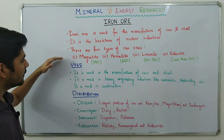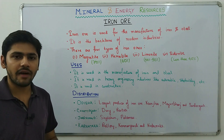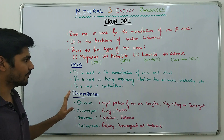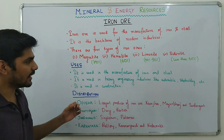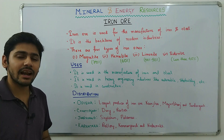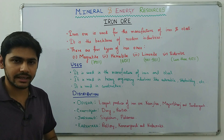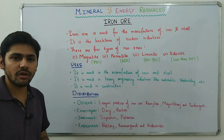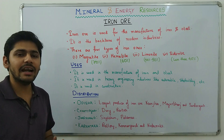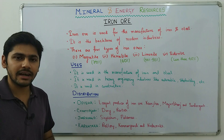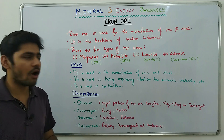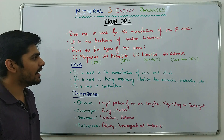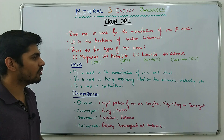Magnetite is the best type of iron ore, containing around 70% iron. Hematite contains around 60% iron and is the most abundant type of iron ore found in India — the majority of iron and steel plants in India use hematite. In limonite, the iron content is less than 40%.